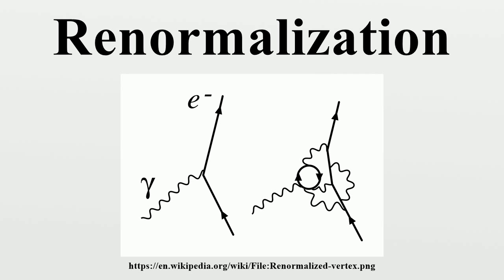This was called renormalization, and Lorentz and Abraham attempted to develop a classical theory of the electron this way. This early work was the inspiration for later attempts at regularization and renormalization in quantum field theory. When calculating the electromagnetic interactions of charged particles, it is tempting to ignore the back reaction of a particle's own field on itself. But this back reaction is necessary to explain the friction on charged particles when they emit radiation. If the electron is assumed to be a point, the value of the back reaction diverges for the same reason that the mass diverges, because the field is inverse square.